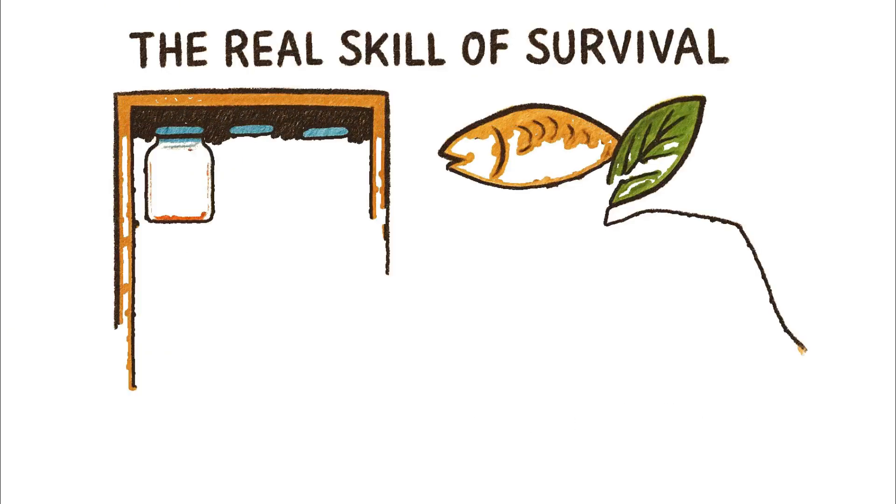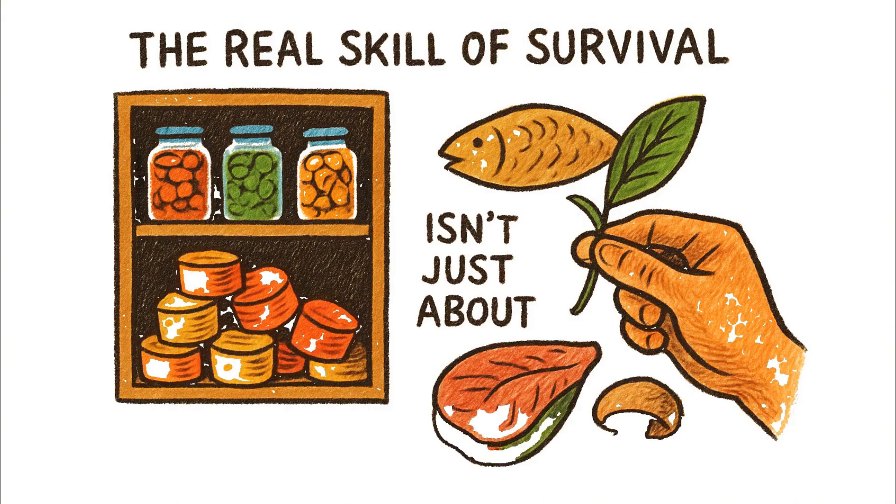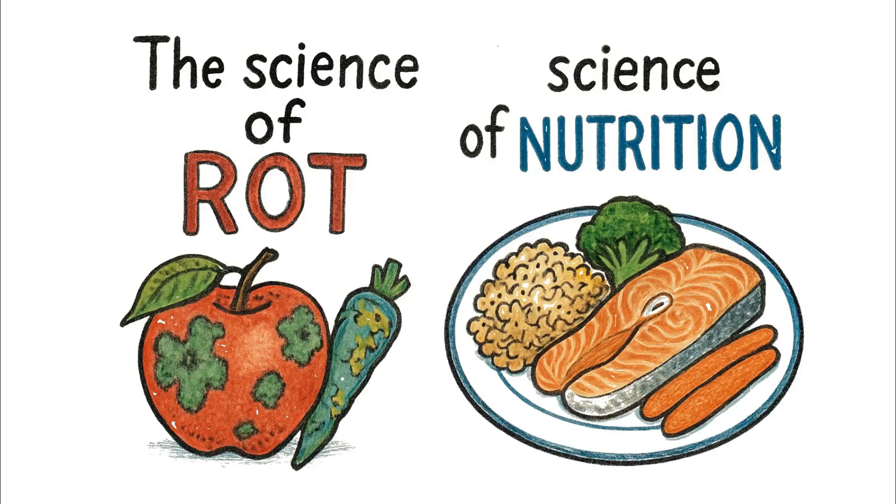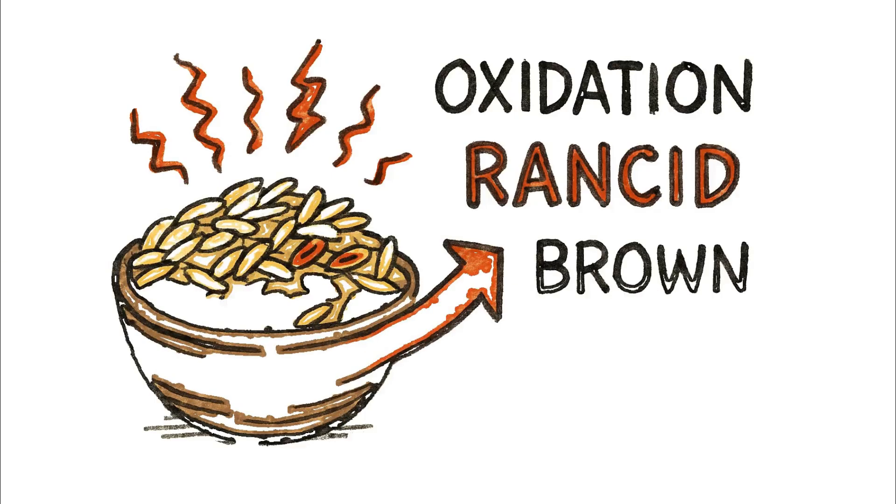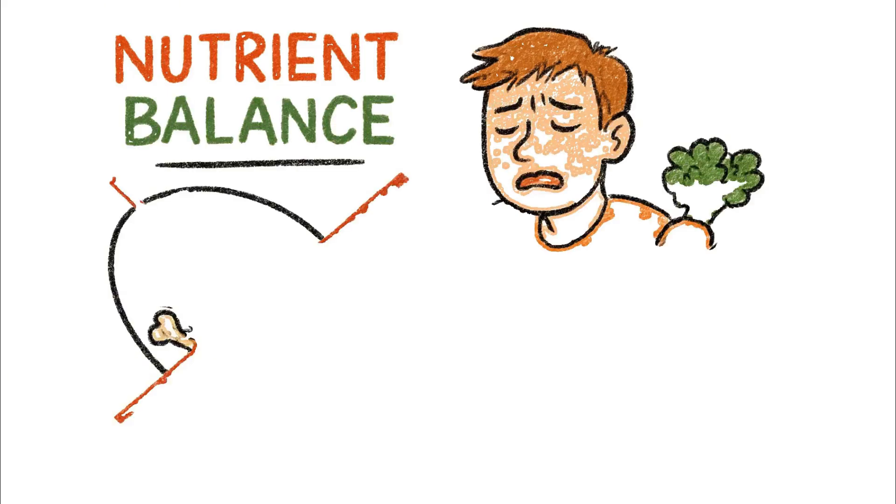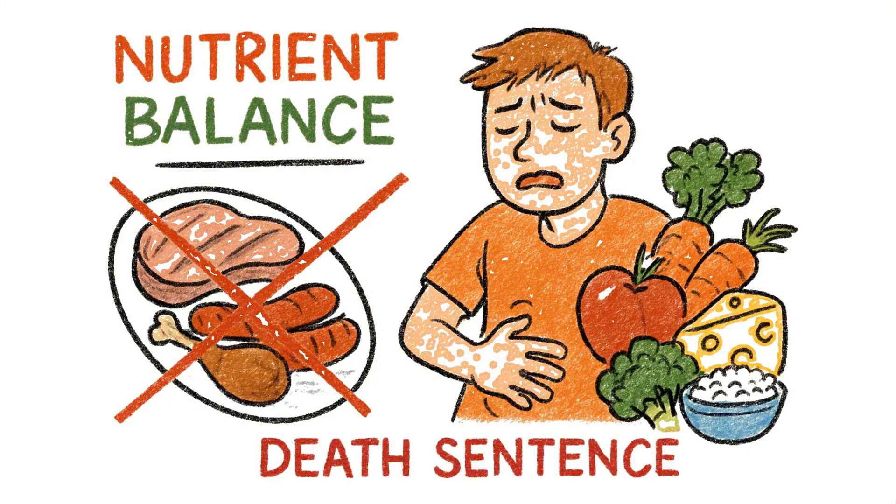So, as we bring these ideas together, we see that the real skill of survival isn't just about stockpiling. It's about understanding the science of rot and the science of nutrition. We've seen how oxidation turns the fats in brown rice rancid, destroying your food supply from within. We understand how crucial nutrient balance is, recognizing that a full stomach of pure protein can be a death sentence.